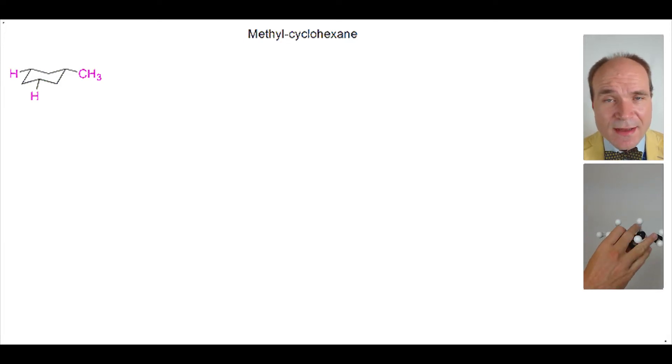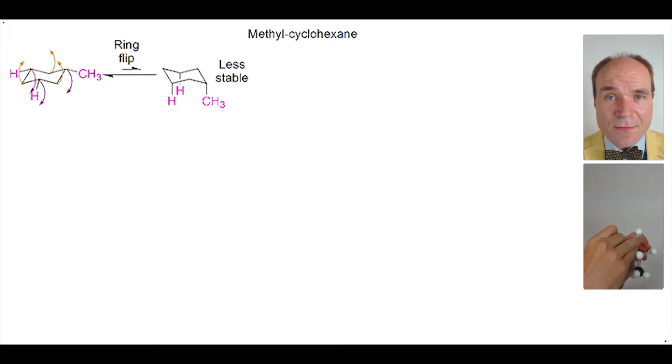But critically, if this chair were to ring flip to the alternate chair conformation, the methyl group would now be in the axial position. And this makes a big difference. The axial methyl is now in close proximity to two other hydrogens within the molecule, creating steric strain.